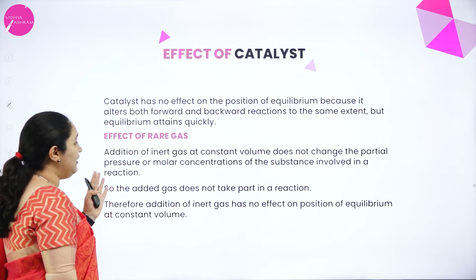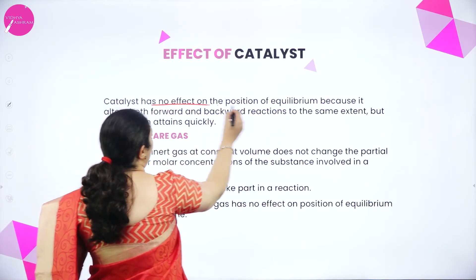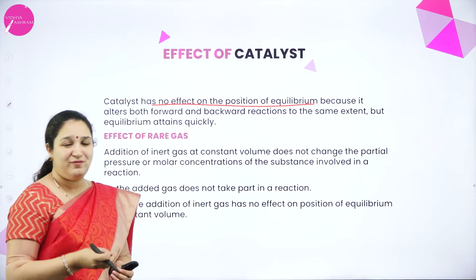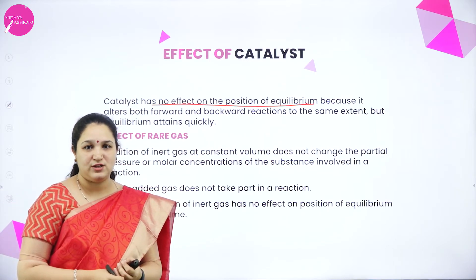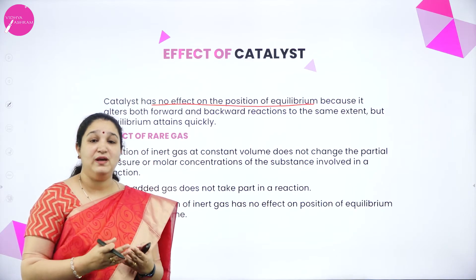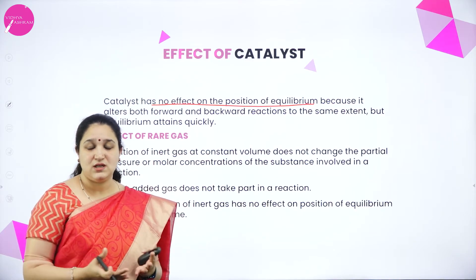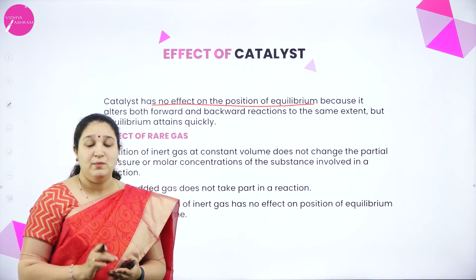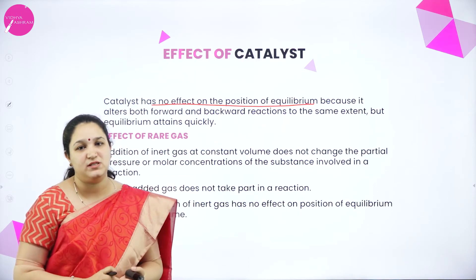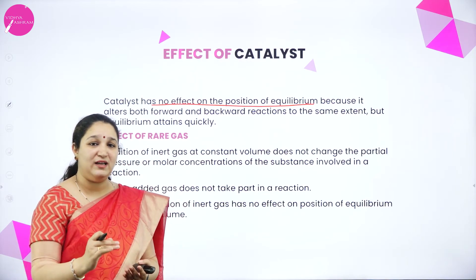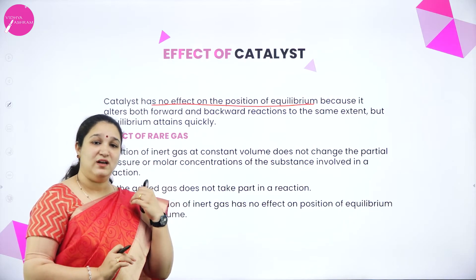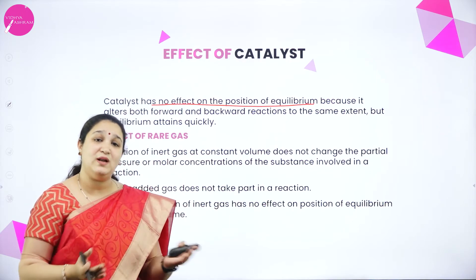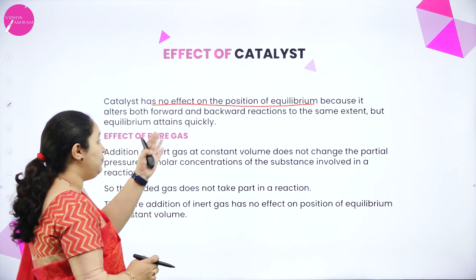Next, effect of catalyst. A catalyst has no effect on the position of equilibrium because it alters both forward and backward reactions equally. If a catalyst is added for a reaction at equilibrium, equilibrium will be attained faster — for example, a reaction that took 20 minutes to attain equilibrium may now happen in just 10 minutes. The time required to attain equilibrium is reduced because it increases both forward and backward reaction rates equally, so it does not alter the position of equilibrium.